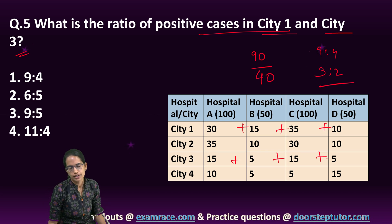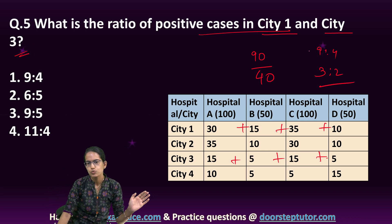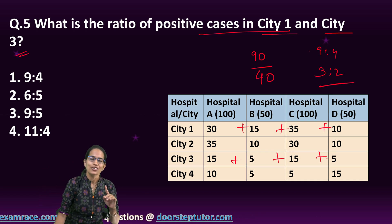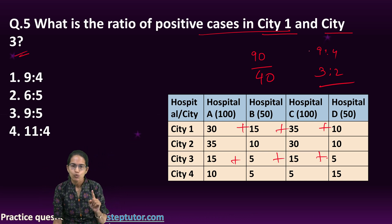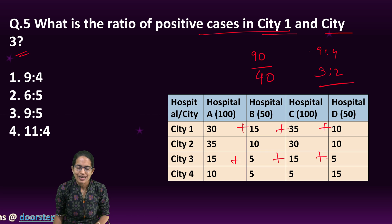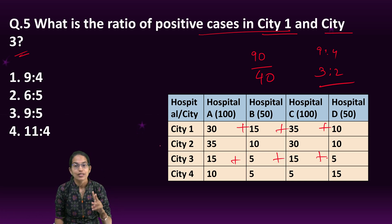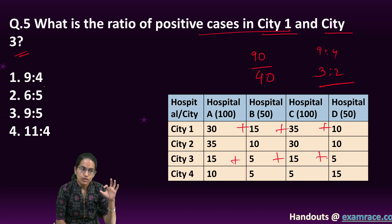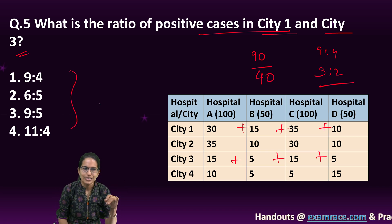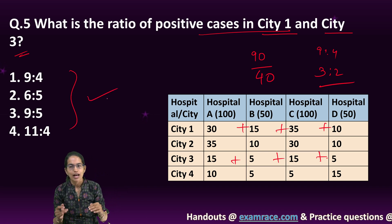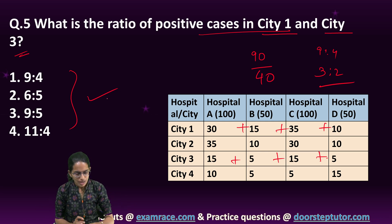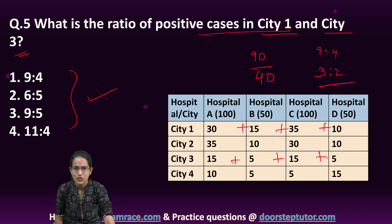So those were some of the data interpretation questions from your NET Paper 1, 2021 examination. The basic idea is you have to be very quick — don't waste a lot of time calculating. Go through the choices, see if approximations can be done, and if nearby options are available, that could be the answer. Thanks for joining in.